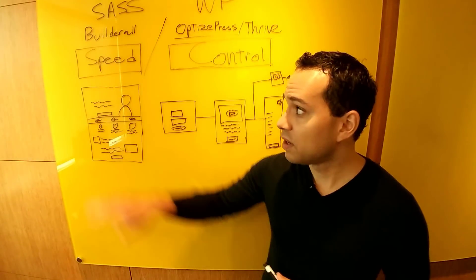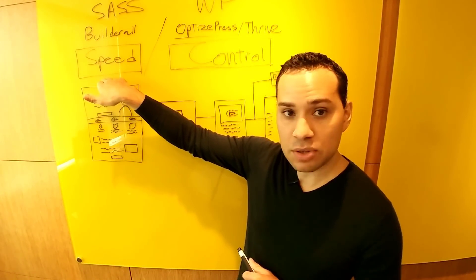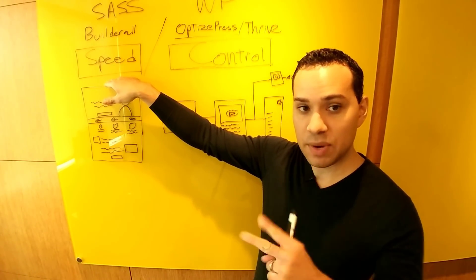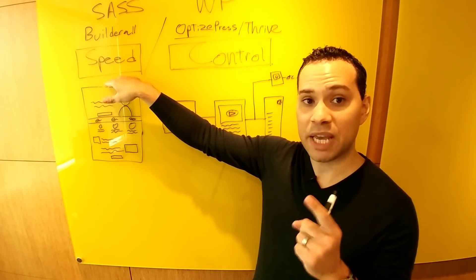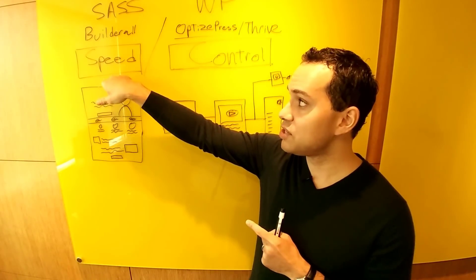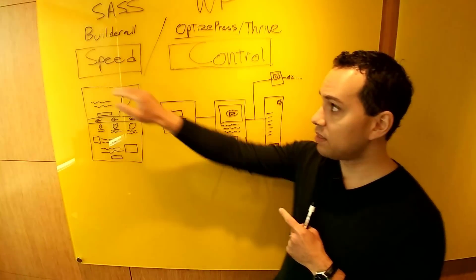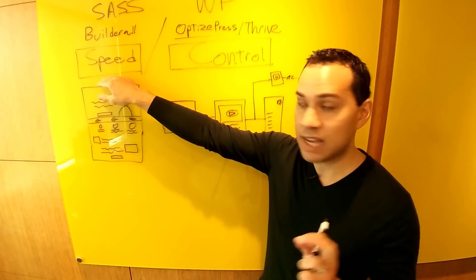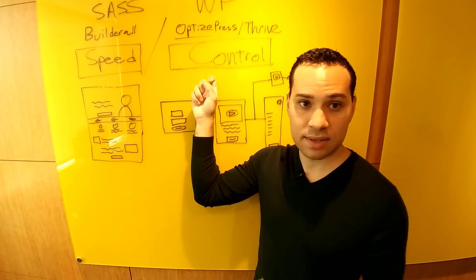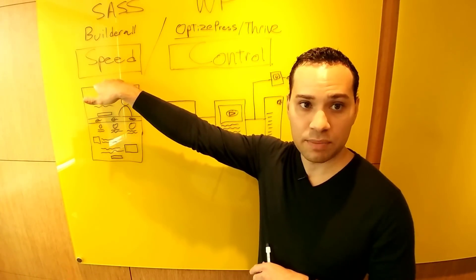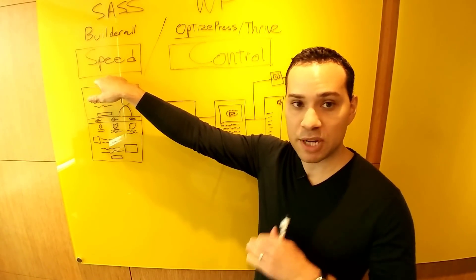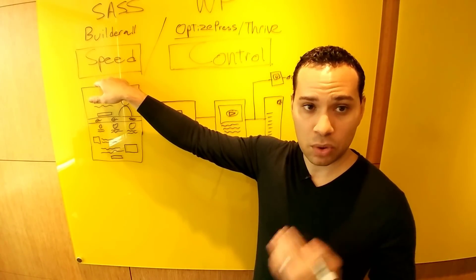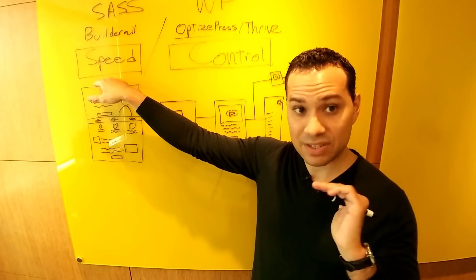Kicking things off, the main two differences between these two are speed and control. Speed has two elements. Number one, speed of the page loading — because the pages and sales funnels you build with a SaaS application are going to be significantly faster than those with a WordPress site. Hands down, out of the box, this is going to be faster, with much better load times on your sales and landing pages, which is really important when you're driving cold traffic.